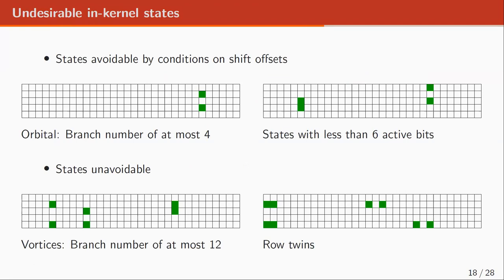In the kernel, there are states that are unavoidable. States that are unavoidable regardless of the choice of shift offset are the orbitals and states with fewer than six active bits. Orbitals are states that have two active bits in the same column and lead to a branch number of at most four. States with fewer than six active bits lead to a branch number less than 12. Irrespective of the shift offset choice, we also have vortices and row twins that are not avoidable. Vortices are six-bit states leading to a branch number of at most 12, and row twins are eight-bit states.